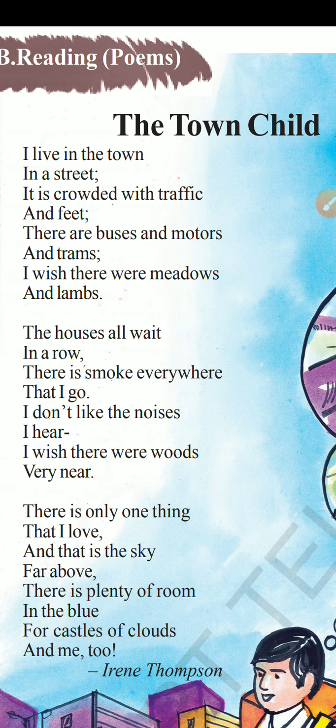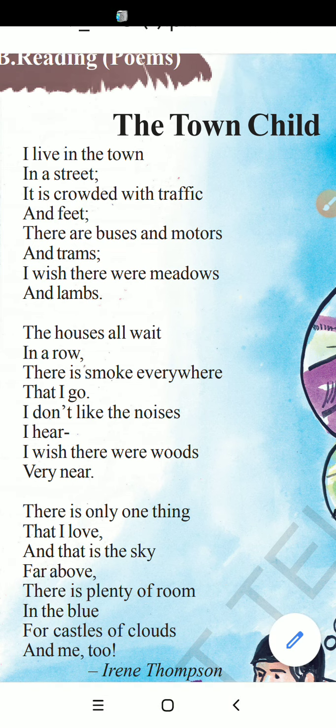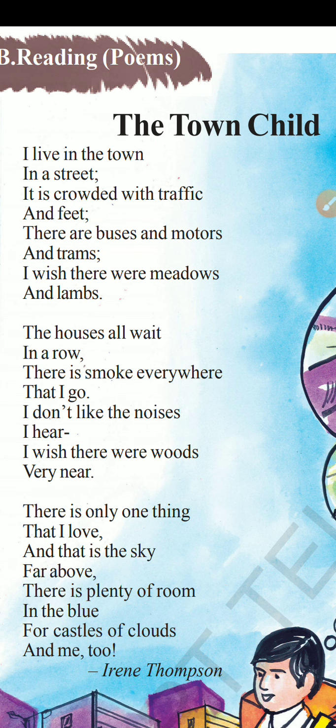'I wish there were meadows and lambs.' The boy is wishing there should be meadows — meadows means green fields — and lambs means baby sheep. So he wishes there were green fields, gardens, greenery, and lambs around him instead of all this crowded town life.